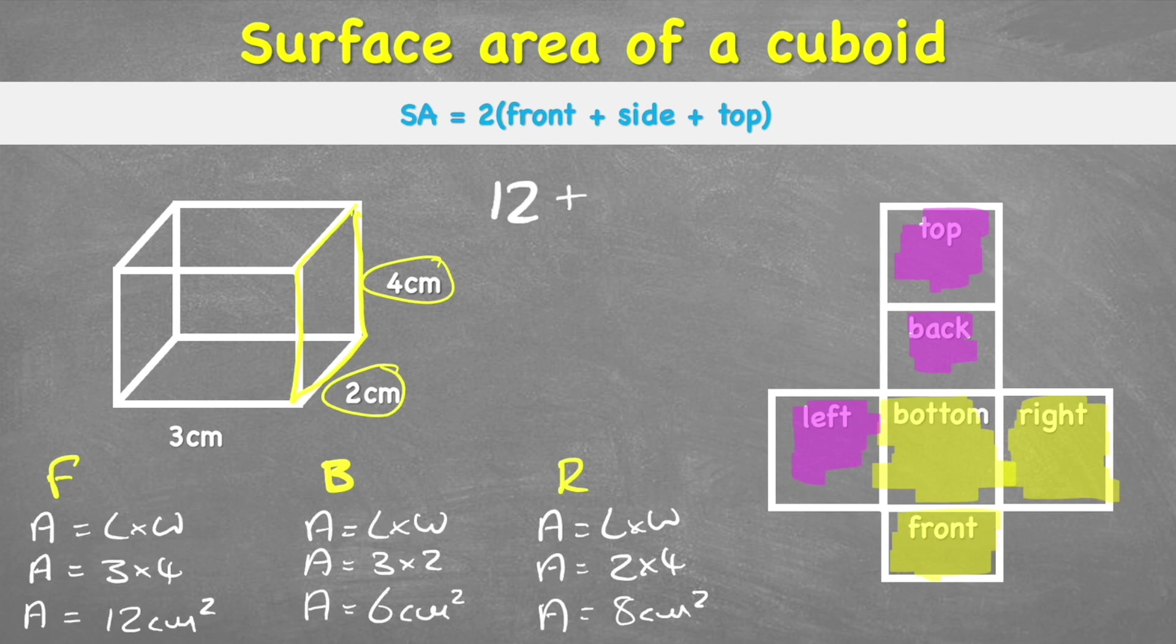We have 12 plus 6 plus 8, which equals 26. 26 multiplied by 2 equals 52. So therefore our total answer is 52 centimetres squared. That gives us our total surface area of all 6 faces.